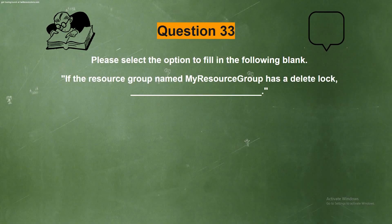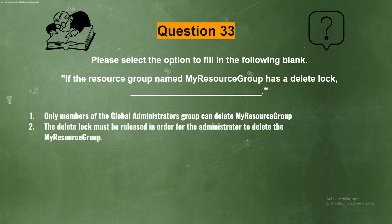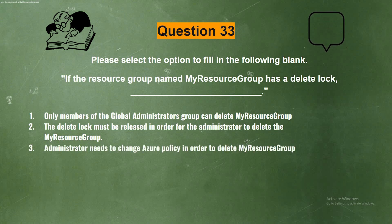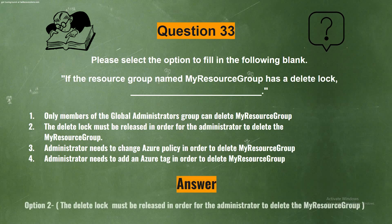Next question. Please select the option to fill in the following blank. If the resource group named 'my resource group' has a delete lock, the options are: option one, only members of the global administrators group can delete my resource group; option two, the delete lock must be released in order for the administrator to delete my resource group; option three, the administrator needs to change Azure policy in order to delete my resource group; option four, the administrator needs to add an Azure tag in order to delete my resource group. The correct answer is option two: the delete lock must be released in order for the administrator to delete my resource group.